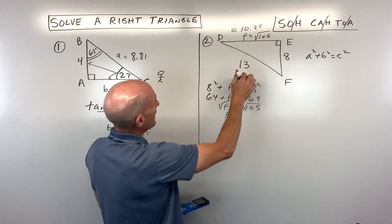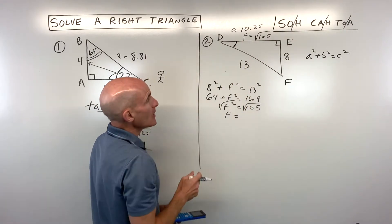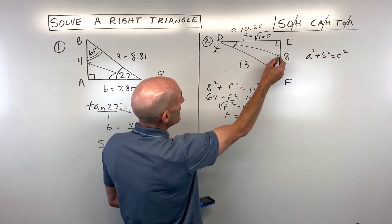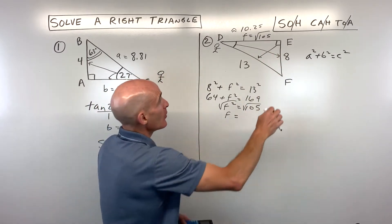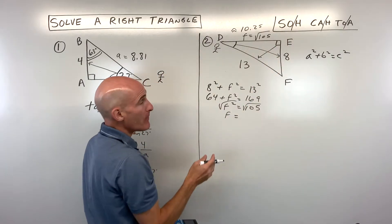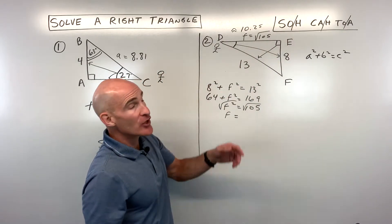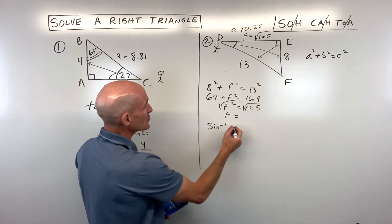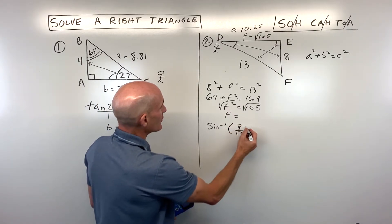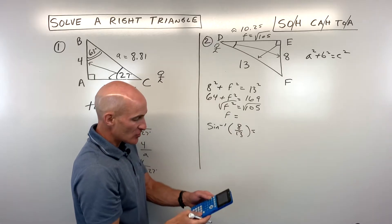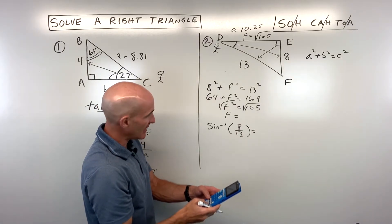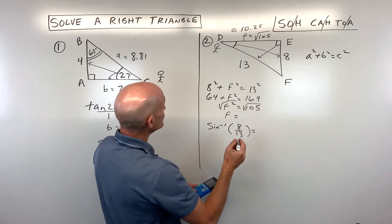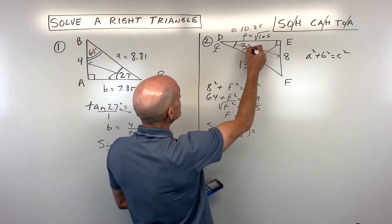Now let's solve for angle D. Positioning at that vertex, we see we have the opposite side and the hypotenuse — that's the sine ratio. But when solving for a missing angle, we use the inverse trig function. So it's the sine inverse of the opposite side 8 over the hypotenuse 13. You may need to press the second key on your calculator to access sine inverse. 8 divided by 13 comes out to approximately 38 degrees.